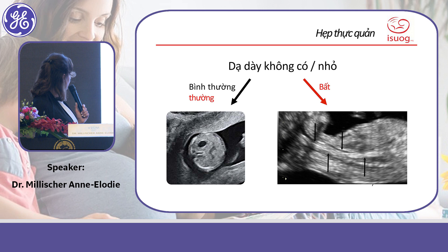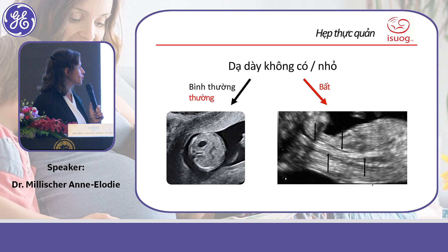On this figure, you can see regurgitation of the fetus due to esophageal atresia. With Doppler, you can see the flux just inside the amniotic fluid, illustrating those regurgitations.